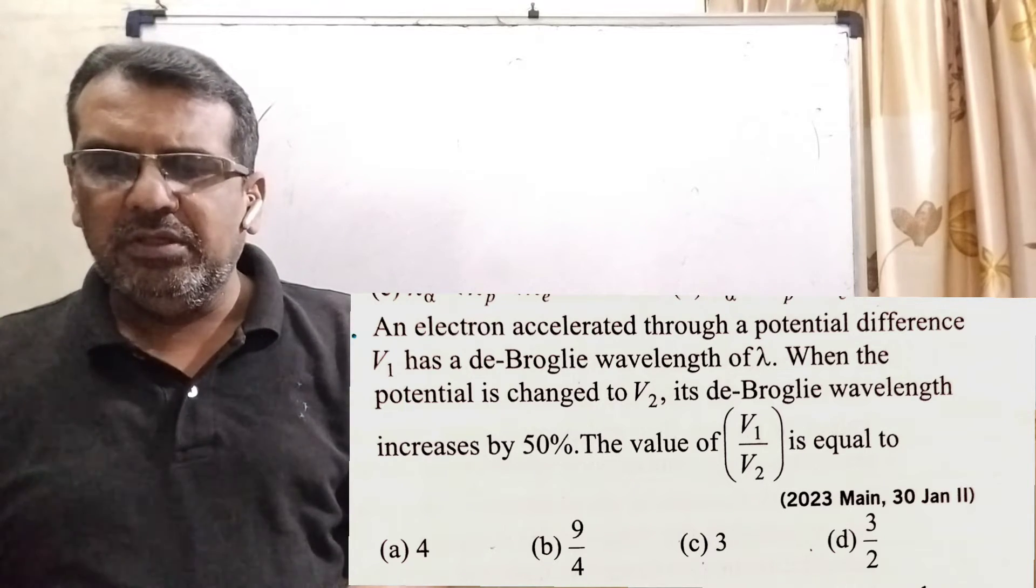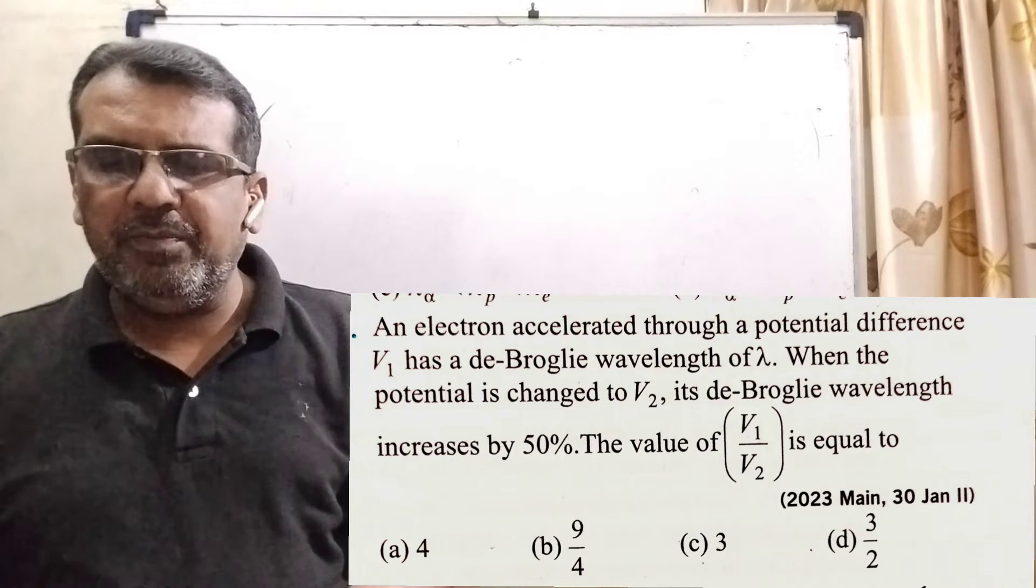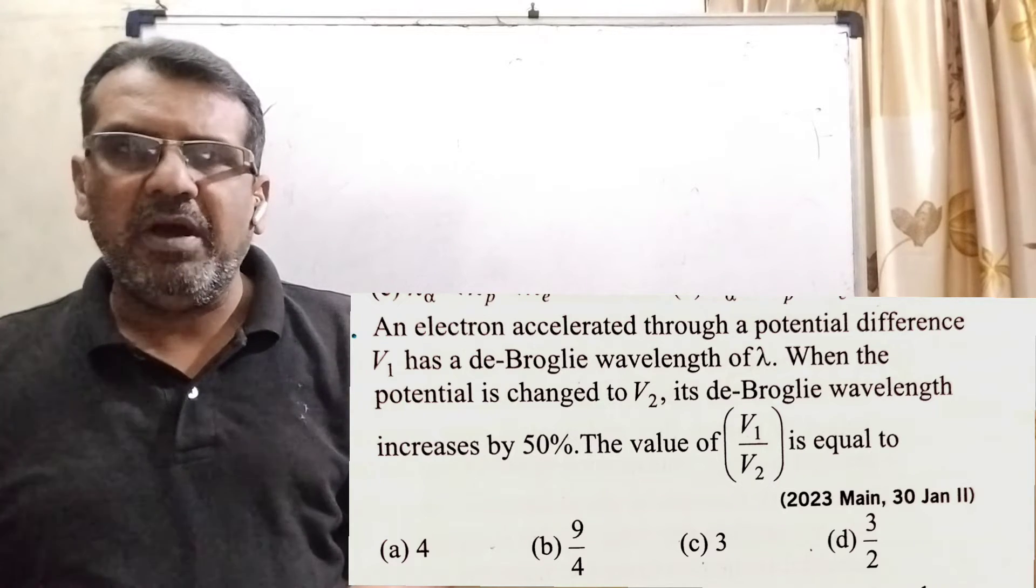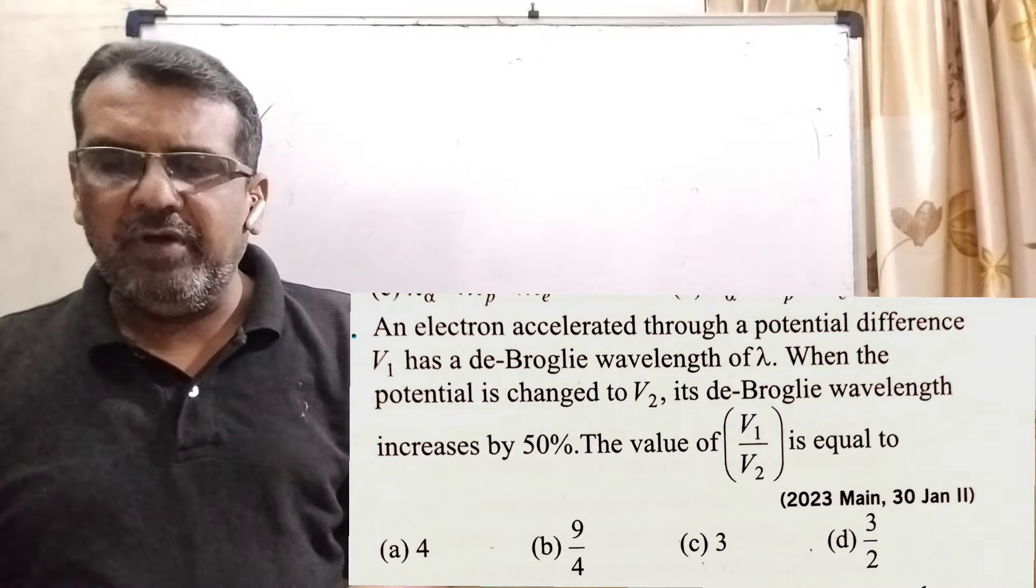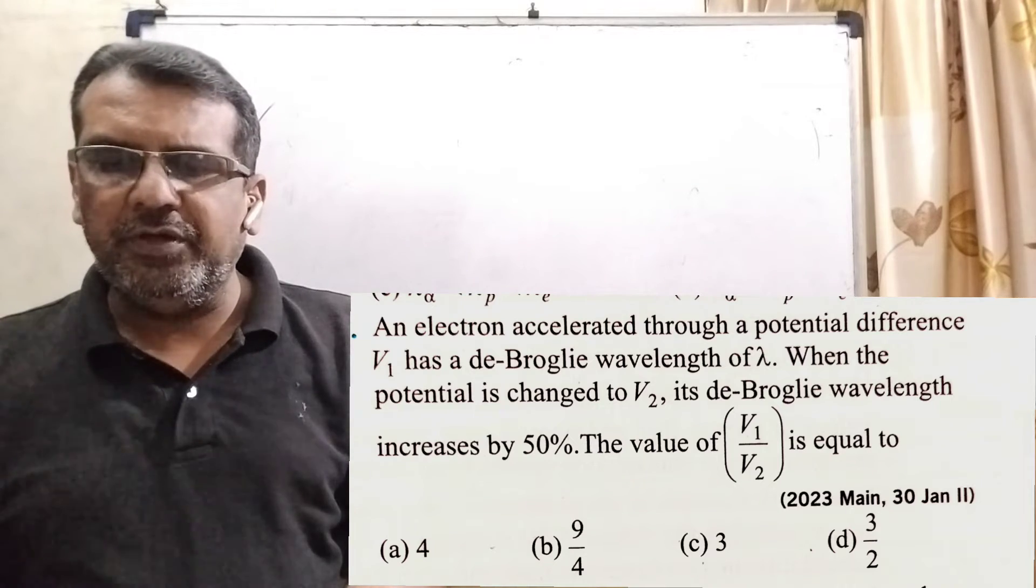When the potential is changed to V₂, its de Broglie wavelength increases by 50%. The value of V₁ upon V₂ is equal to: